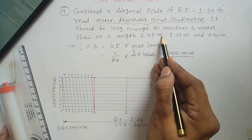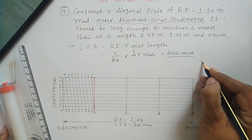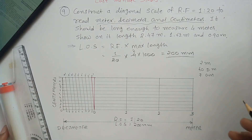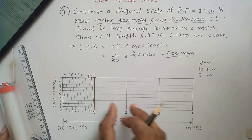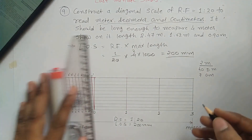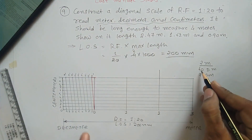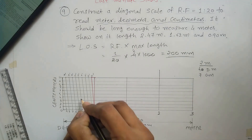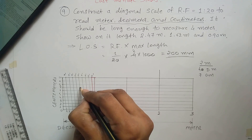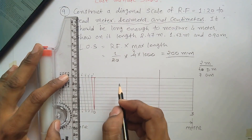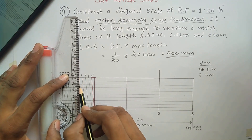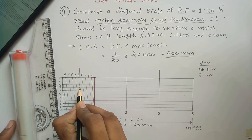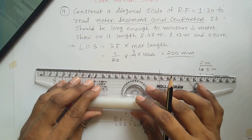To measure 2.47 meters, we have three units: 2 meters, 4 decimeters, and 7 centimeters. Locate 2 meters and extend across. 4 decimeters is located here. For 7 centimeters, find the intersecting point — 4 from one direction and 7 from the other. This intersection gives you 2.47 meters as your first measurement.